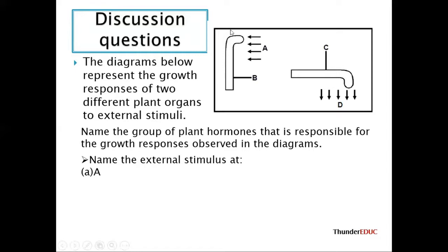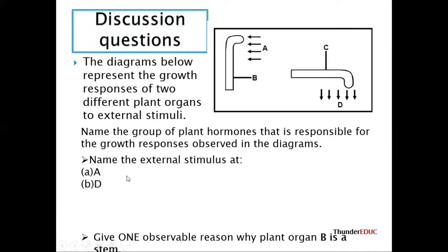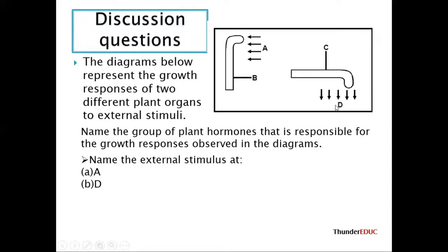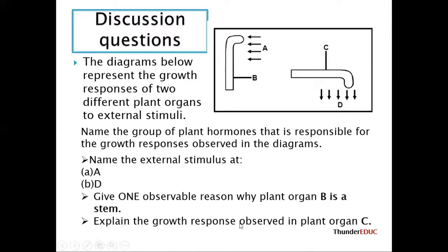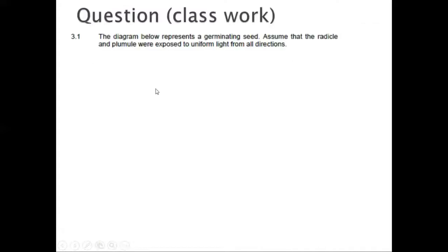For part A, the external stimulus is light because the plant is bending towards the source of the stimulus. For part D, it is gravity because the plant is bending in the direction of gravity. Give one observable reason why organ B is a stem — because organ B is bending towards the source of stimulus A.